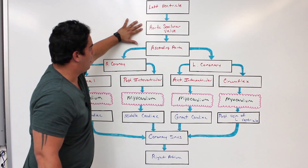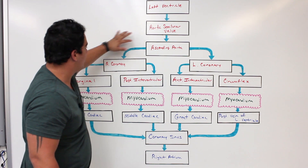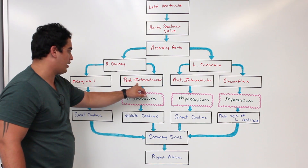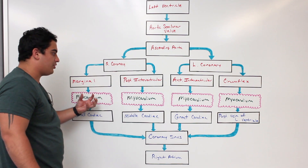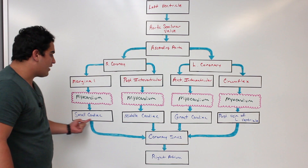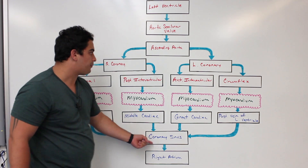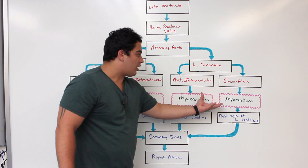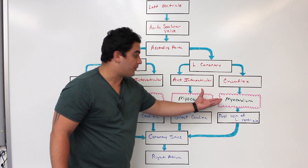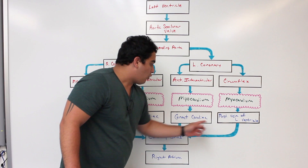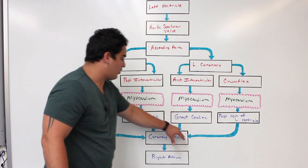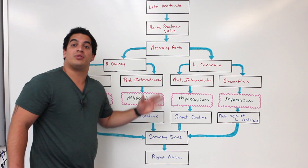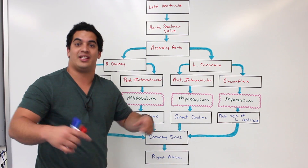Quick recap: the left ventricle pumps blood into the aortic semilunar valve, then into the ascending aorta, which branches into the right and left coronary arteries. The right coronary gives off the marginal and posterior interventricular arteries, which supply the myocardium by dropping off oxygen and picking up CO2, and are drained by the small and middle cardiac veins into the coronary sinus. The left coronary gives off the anterior interventricular and circumflex branches, drained by the great cardiac vein and posterior vein of the left ventricle, which also empty into the coronary sinus, which empties into the right atrium and out to the pulmonary circulation.